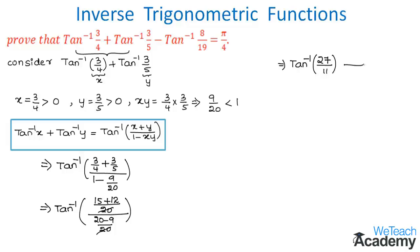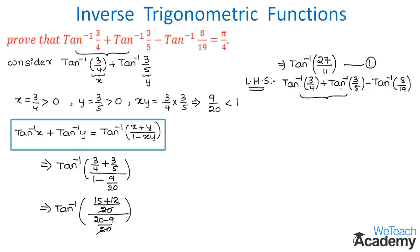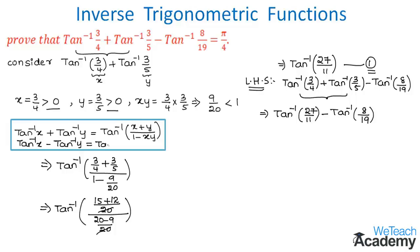This is the value of tan inverse 3/4 plus tan inverse 3/5, which we name equation 1. Now for the full LHS: tan inverse 3/4 plus tan inverse 3/5 minus tan inverse 8/19. Substituting from equation 1, this becomes tan inverse 27/11 minus tan inverse 8/19. Since 27/11 > 0 and 8/19 > 0, we use the formula: tan inverse x minus tan inverse y equals tan inverse of (x minus y) divided by (1 plus xy).